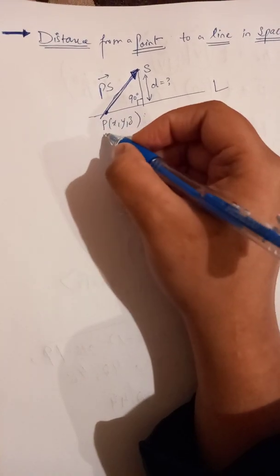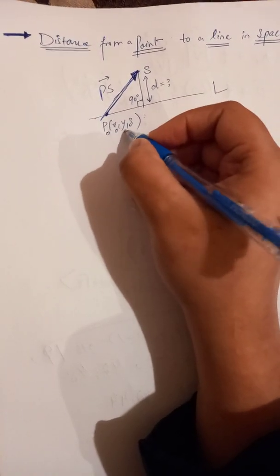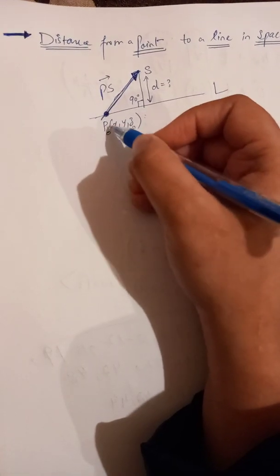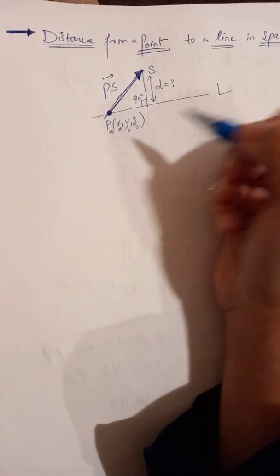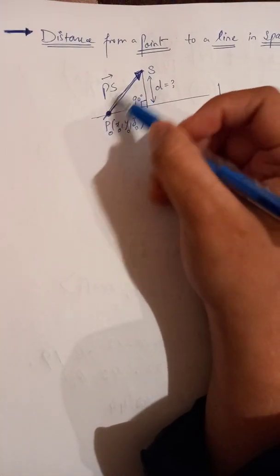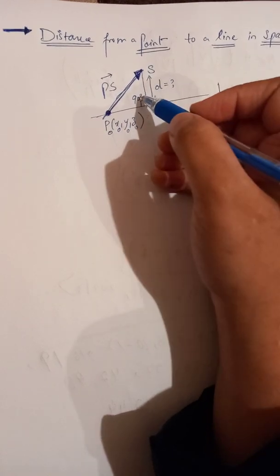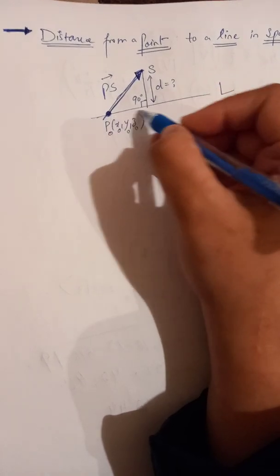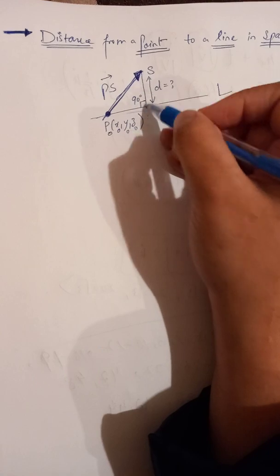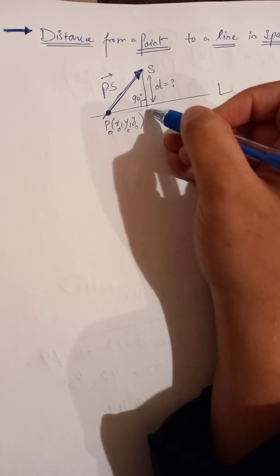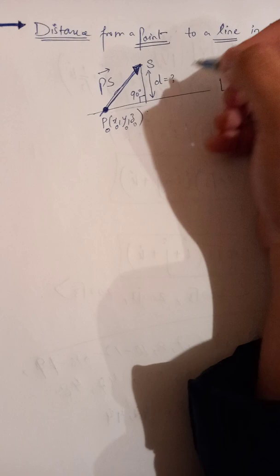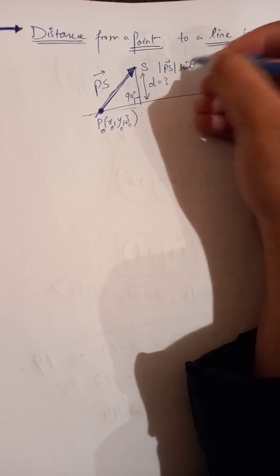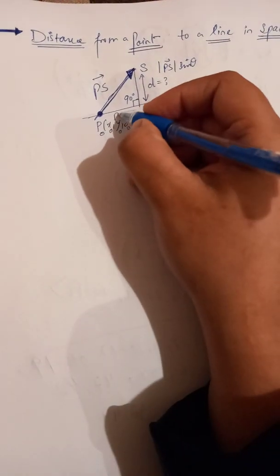Let's denote the point where the line passes as P naught, with coordinates x naught, y naught, and z naught. The vector PS decomposes into two components: a horizontal component and a vertical component. The vertical component of PS is the magnitude of PS times sin θ.